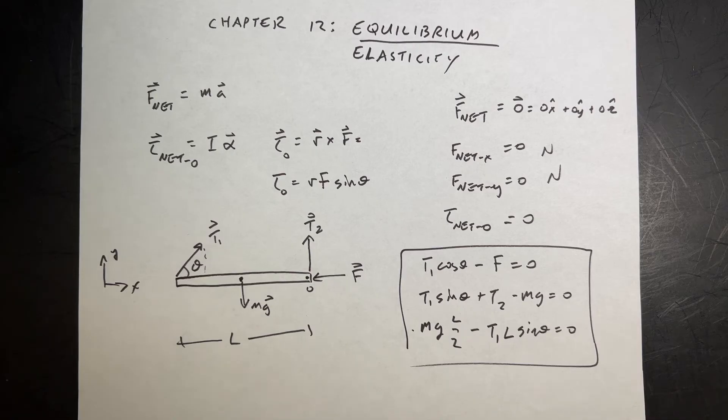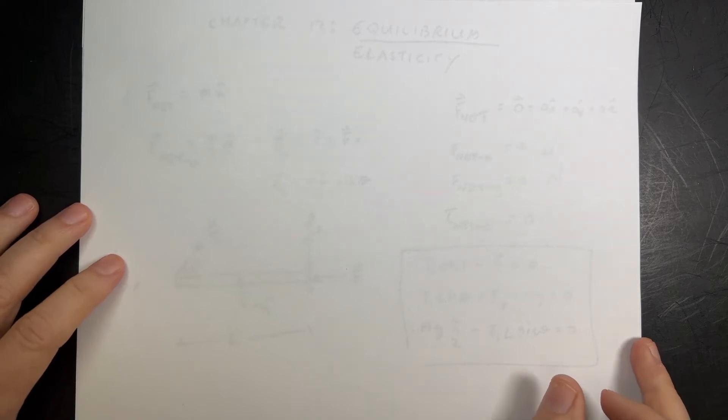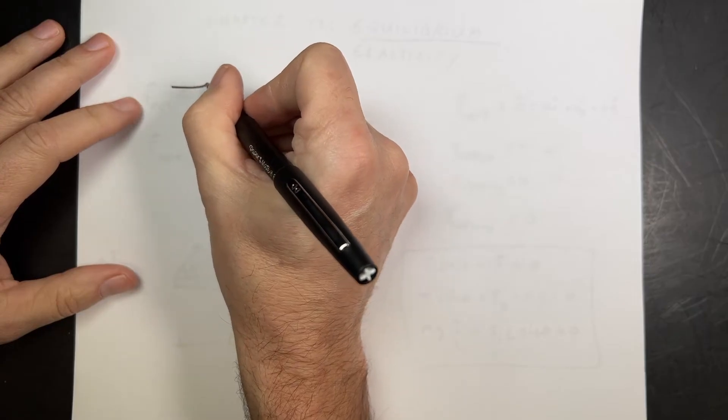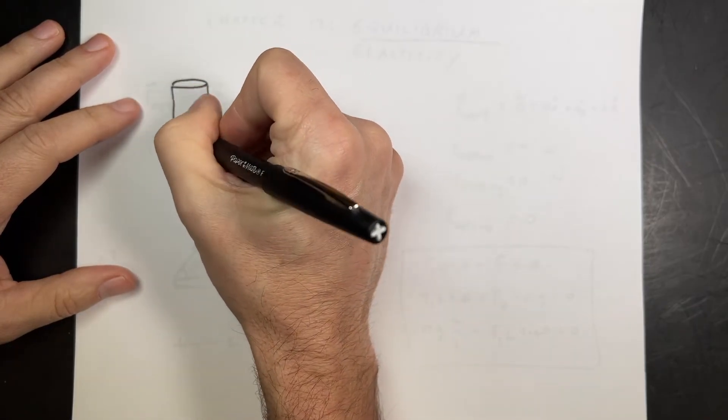There's a whole bunch of cool problems like that. The other thing in this chapter is elasticity. Elasticity, I'm really just going to talk about one thing, and that's Young's modulus.